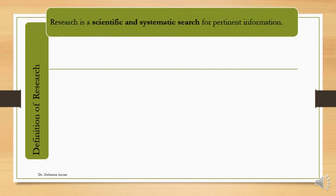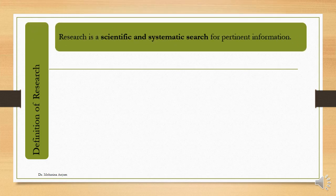Now we will see the different definitions of research. Research is a scientific and systematic search for pertinent information. Scientific means anybody can test it. Systematic means each step of research leads to the next step. For example, without defining the problem, findings cannot be suggested, and without collection of data, data cannot be analyzed. We will discuss how systematic research is when we discuss the steps of research.